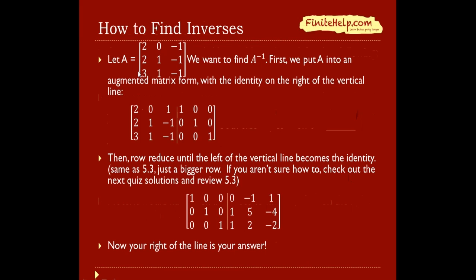So let A be this matrix, and we want to find A inverse. First we're going to put A into an augmented matrix form, with the identity on the right hand side of the vertical line this time. So here we have A, and here we have the identity.